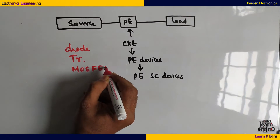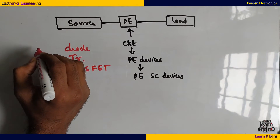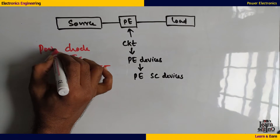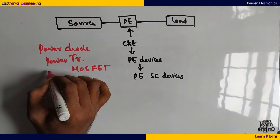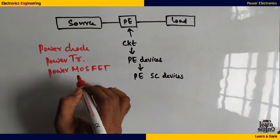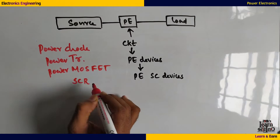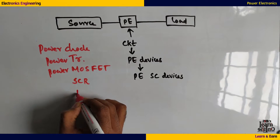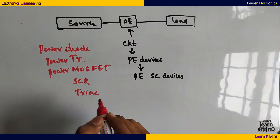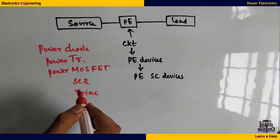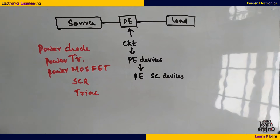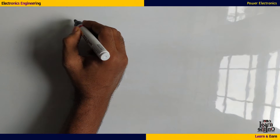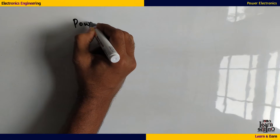In Power Electronics, we use a power diode, power transistor, power MOSFET, and a few additional devices like SCR, TRIAC, DIAC, GTO, and IGBT. We use three types of semiconductor devices and three categories.